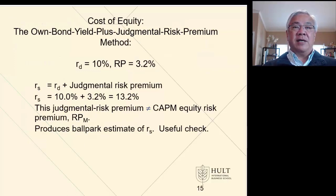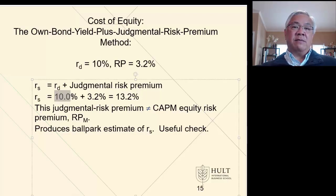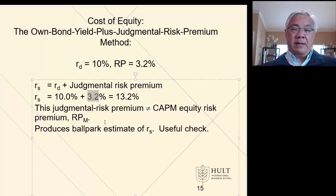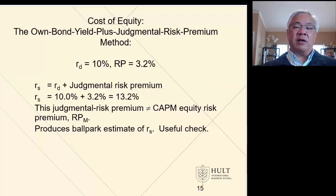The other approach uses some judgment. I know the cost of debt, and the markets have a premium they want over the bond rate to own our stock. So it's simply the 10% yield to maturity, which is a determinable number, plus 3.2%, which is what we think the premium would be for our company based on current circumstances. That gives us a rate of 13.2%. This is a bit of a crystal ball, but it's useful if we have a broad understanding of the markets and the company.